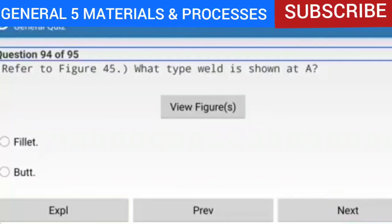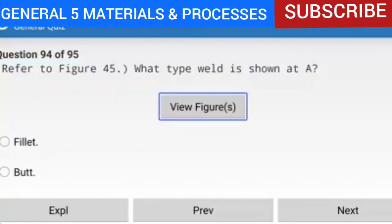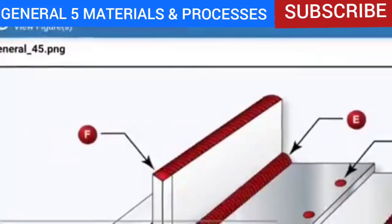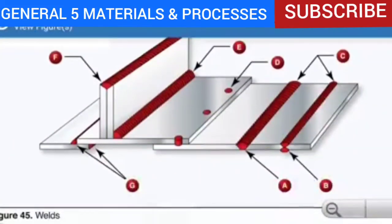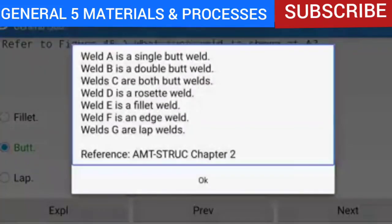Question 94 of 95: Refer to figure 45 — what type weld is shown at A? The answer is a single butt weld. Weld A is a single butt weld. Weld B is a double butt weld. Weld C are both butt welds. Weld D is a rosette weld. Weld E is a fillet weld. Weld F is an edge weld. Weld G are lap welds. Reference: AMTSTRUC Chapter 2.